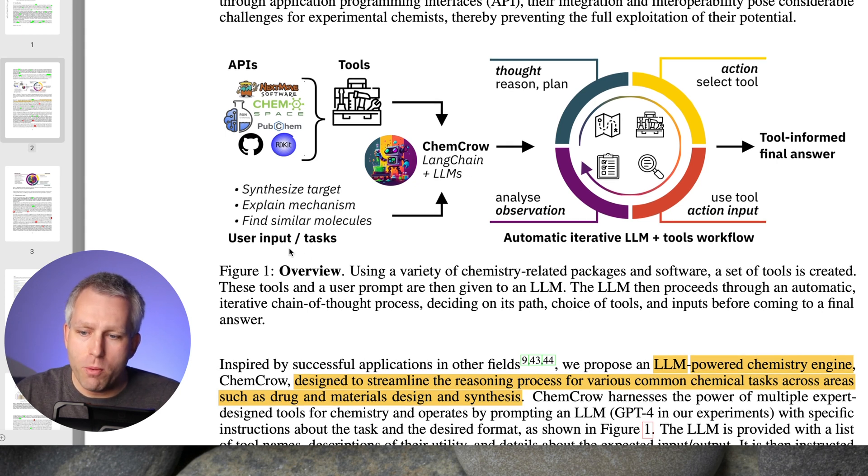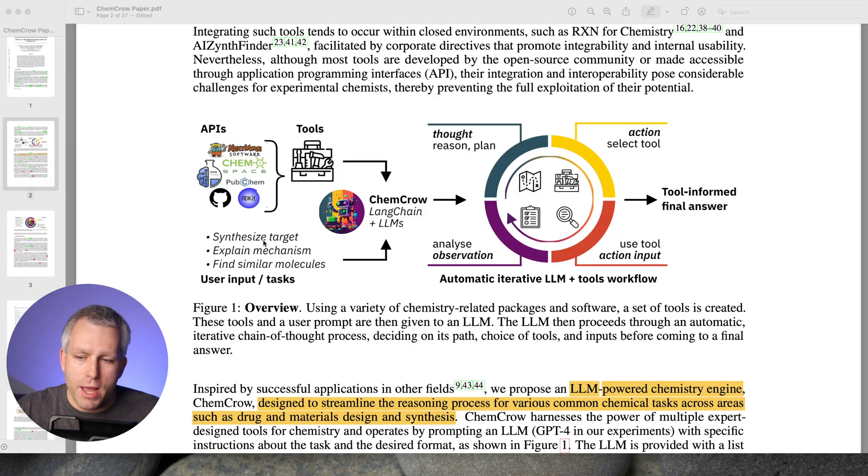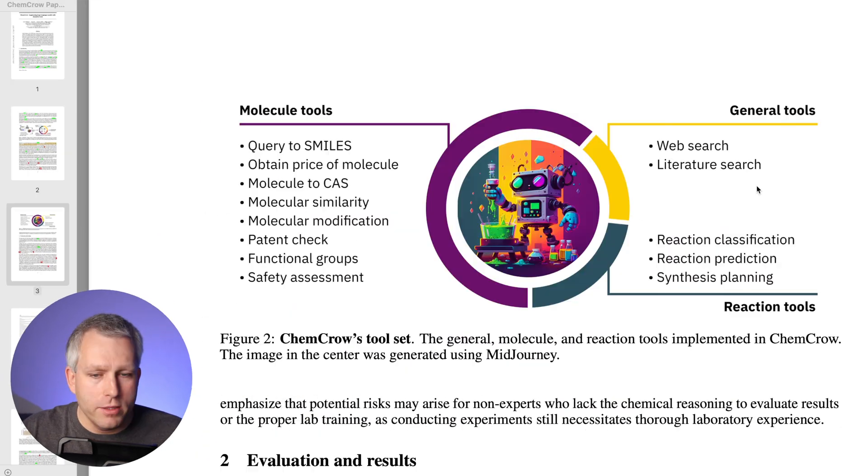What ChemCrow does is it combines user input and tasks that you give it - these would be the prompts that you would give to GPT alone normally - and it combines this user input with tools. Let's look at the tools in figure 2. They split the tools in three categories: general tools, molecule tools, and reaction tools.